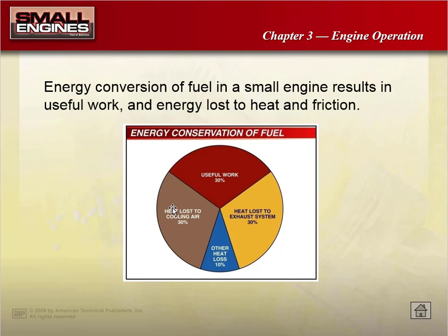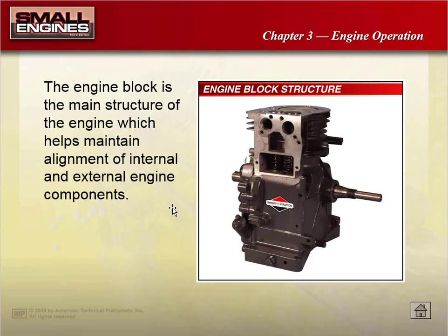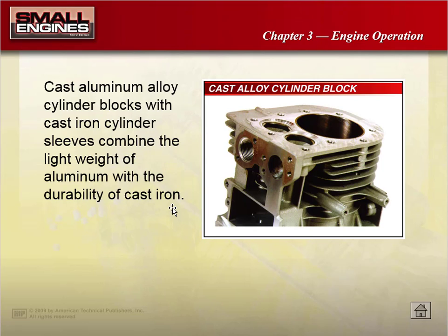Regarding energy conversion: we can get about 30% useful work out of a small engine — the rest is lost to heat. The engine block is the main structure of the entire engine, typically a large metal block. All components like pistons, valves, crankshaft, and connecting rods go inside it. Engine blocks are usually made of aluminum to save weight, with a cast iron sleeve on the inside to withstand the strong pressure of the power stroke.